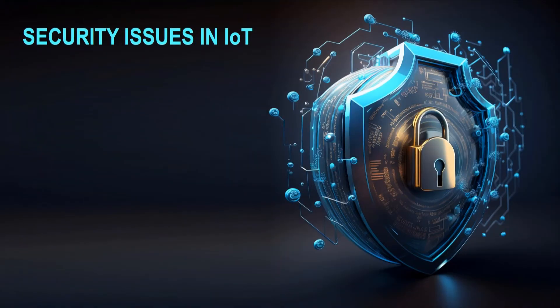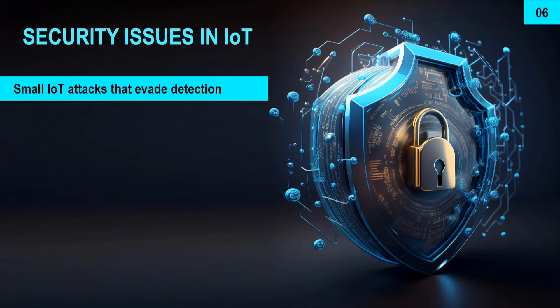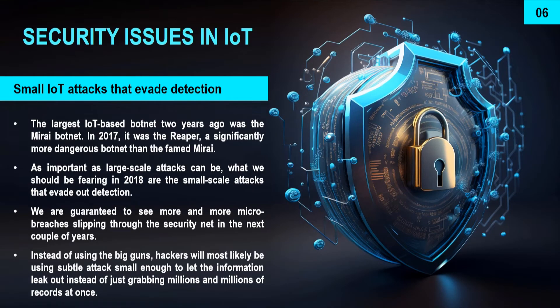Sometimes we discuss large IoT attacks like the Mirai botnet, but small IoT attacks that evade detection are also dangerous. For example, small attacks on web services or a single sensor in your home — like an IP camera — where somebody hacks that camera and takes confidential data from your home, which can then be given to criminal purposes. Your house may be scoped out by criminals and placed at risk. Such small IoT attacks are also very dangerous.